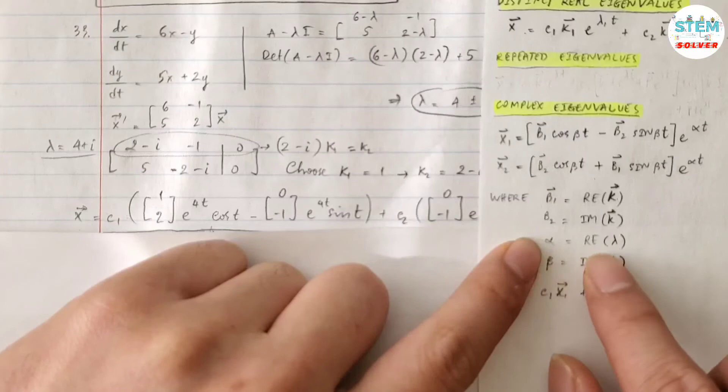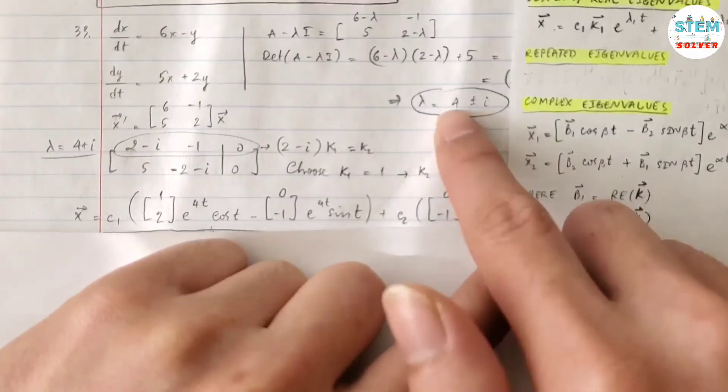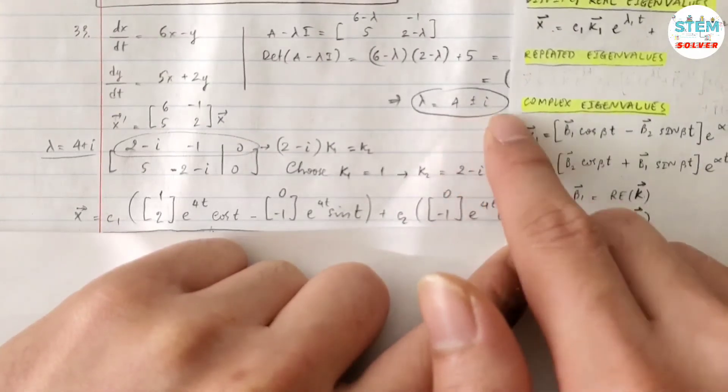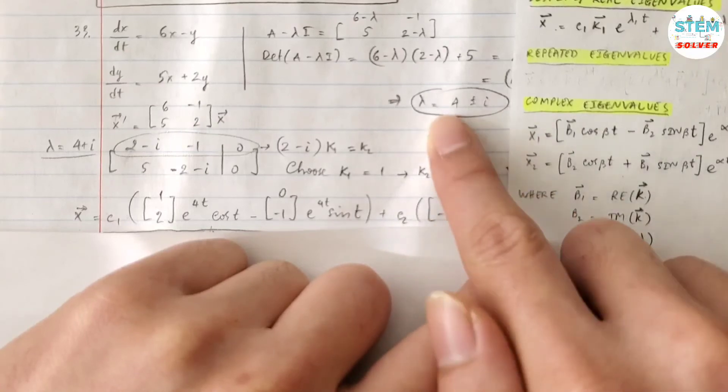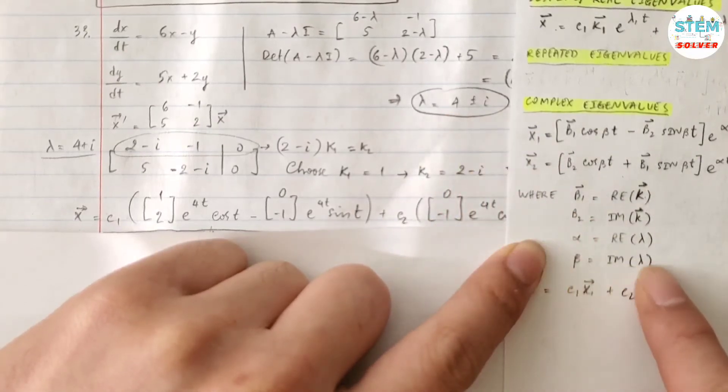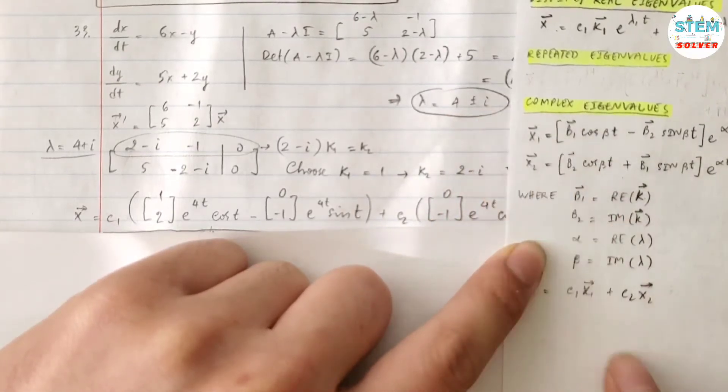Well, what is α? α is the real part of λ. So in this case, you have λ equals 4 plus minus i. So α is 4, the real part. β is imaginary part of λ, which is 1, okay?